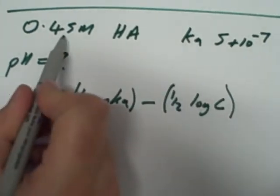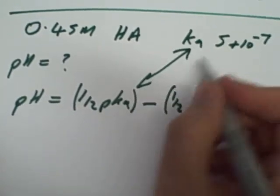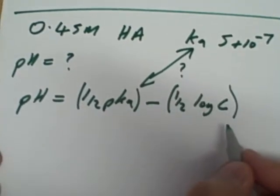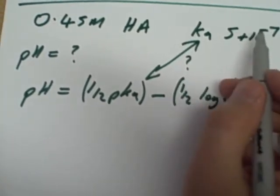Not a problem, we've got 0.45 there, but how do I get Ka to pKa? How's all that coming about? If you remember from the lectures, you've got this Ka—it's a really small number—and you get a real spread of different Ka values.